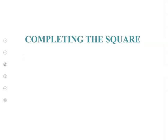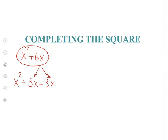We will start with a geometric representation of the idea. Let's say we have the expression x squared plus 6x and we want to complete the square of this expression. Let's break down 6x into two equal parts: 3x plus 3x. And here I have x squared. Now I will use different geometric shapes. I will use a square with side x — so this side is x and this side is x.